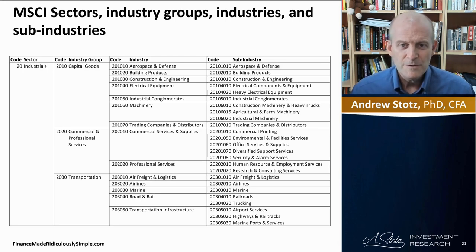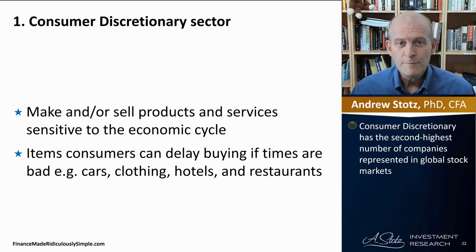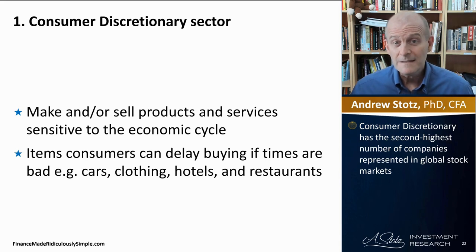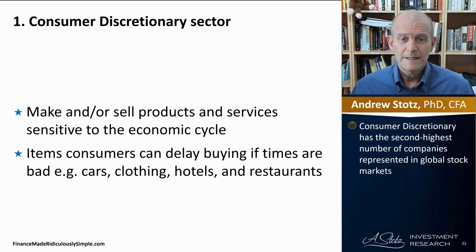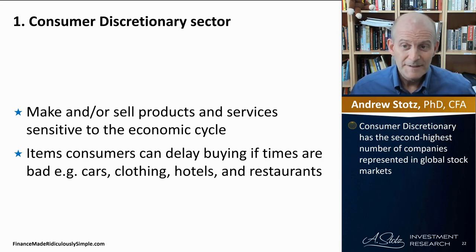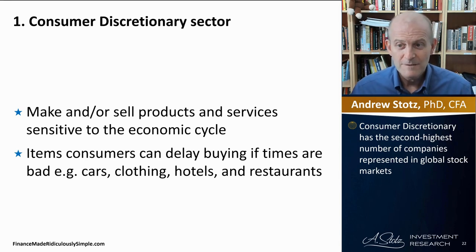The first sector is consumer discretionary — companies that make or sell products and services that are sensitive to the economic cycle. These are items a consumer could delay purchasing. This sector has the second highest number of companies represented in our global stock markets.